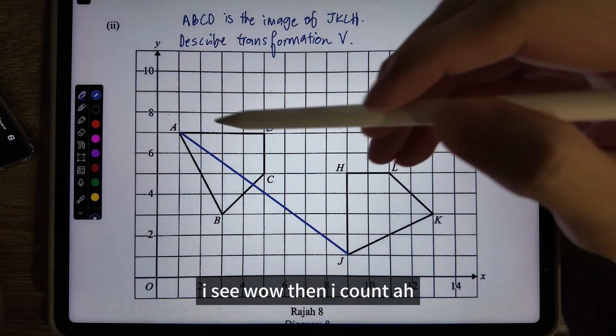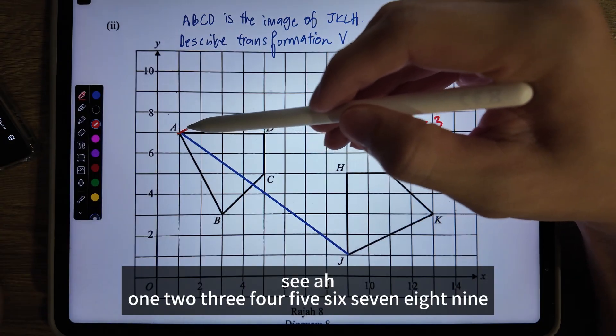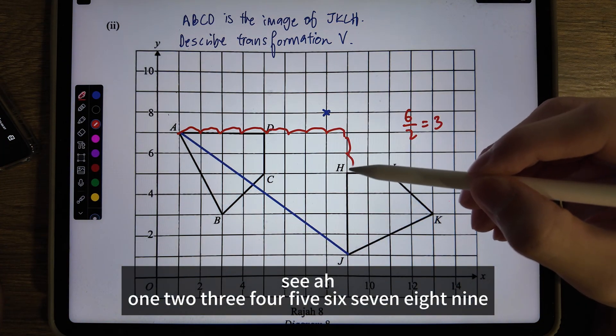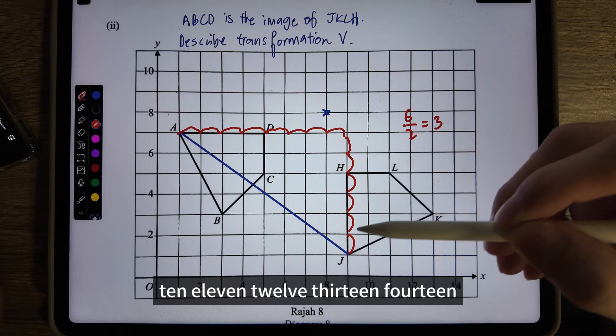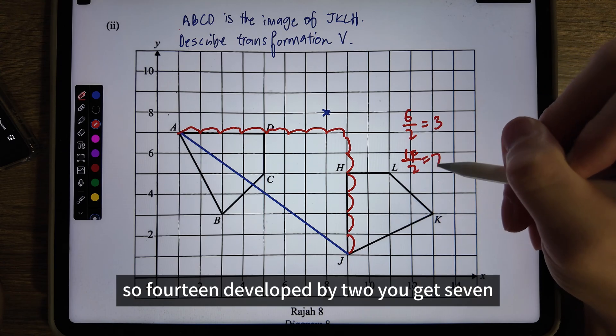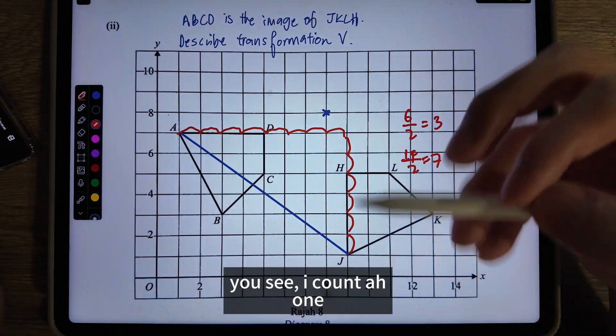You see, I try A to J. From A to J, I see - wow! Then I count: one, two, three, four, five, six, seven, eight, nine, ten, eleven, twelve, thirteen, fourteen. You see? I'm shaking. This method is crazy! So 14 divided by two, you get seven. Start from A or start from J, both can work.